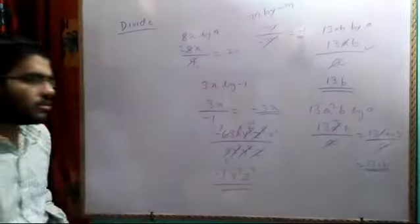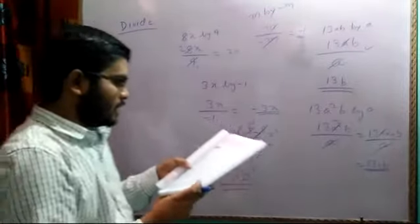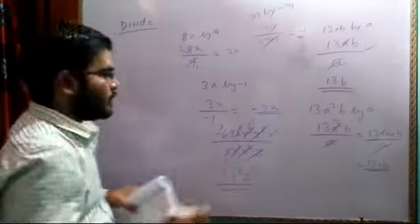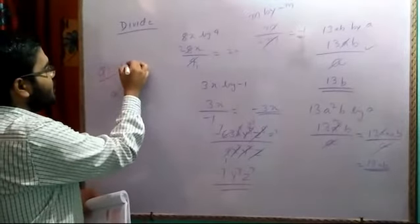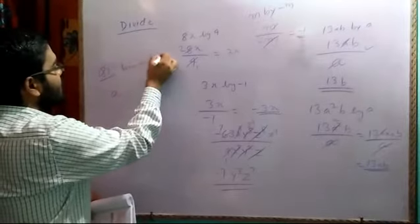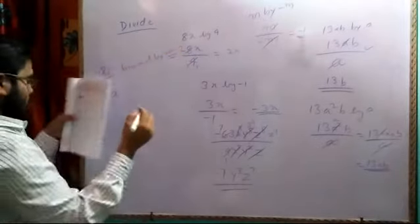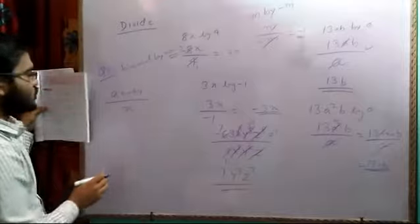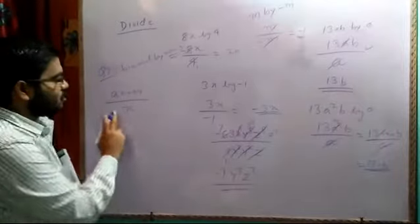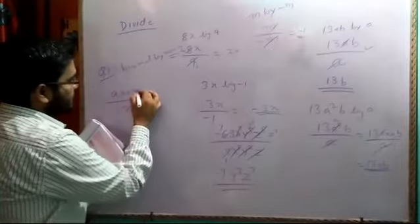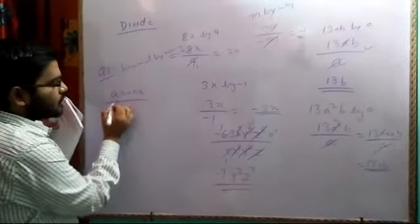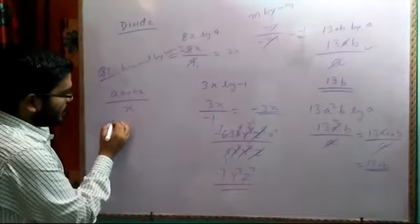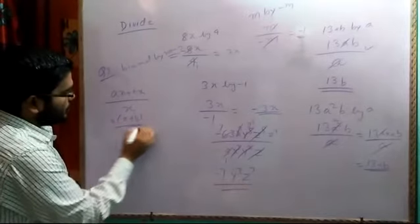Now for binomial divided by monomial. Question number 3 says: ax plus bx whole divided by x. For method 1, you can take out the common factor x from the numerator: x times (a plus b), all divided by x. Then x and x cancel, so the answer is a plus b.